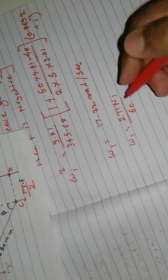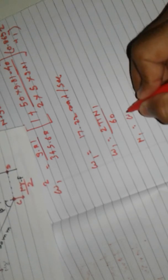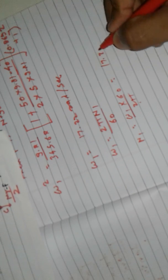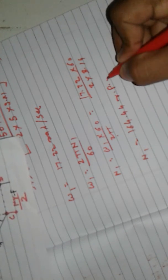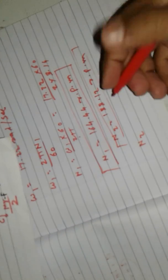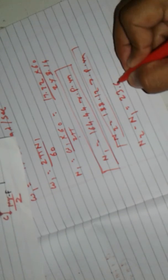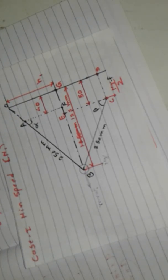Since ω = 2πN/60, we get N1 = ω₁ × 60 / (2π) = 17.22 × 60 / (2 × 3.14) = 164.44 RPM. Similarly, N2 = 188.12 RPM. The range of speed = N2 − N1 = 188.12 − 164.44 = 23.68 RPM.